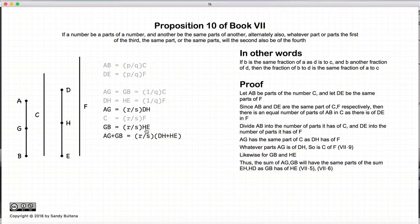So according to Proposition 5 and 6 of this book, we can add them together. So AG plus GB will have the same fractions of DH plus HE. Now AG plus GB is equal to AB, and DH plus HE is equal to DE.